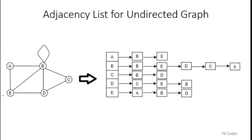Let's take an example — the same undirected graph used for adjacency matrix, with five nodes and a set of edges. To create an adjacency list, the first step is to count the number of nodes. We have five nodes: A, B, C, D, E. So we create an array of five elements, where each element points to a list of all adjacent nodes.